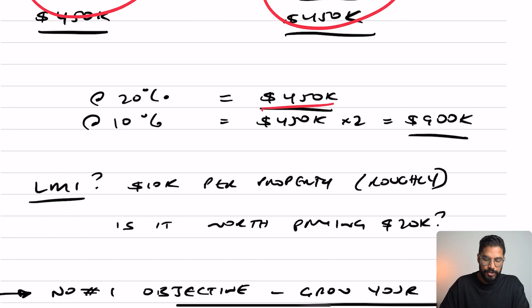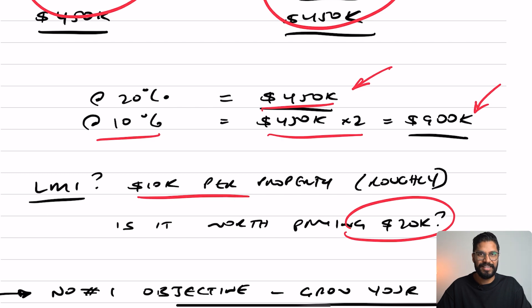Let's look at this example. If you went ahead and you use the 20% deposit and you purchase one property at $450,000, and the other option was 10% deposit gets you two properties, that means your asset value in option one would be worth $450,000. However, in option two would be worth $900,000 because it's twice the amount. So the question is how much will LMI actually be? Now on this, it would be about $10,000 per property. I'm going to give you a second to smash that like button before we continue.